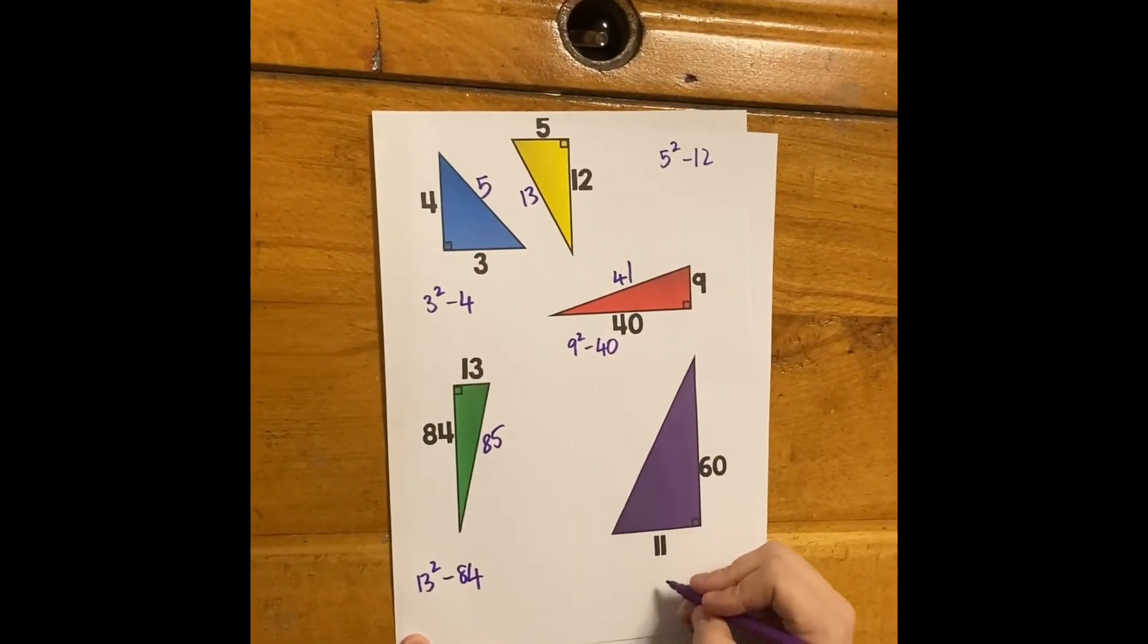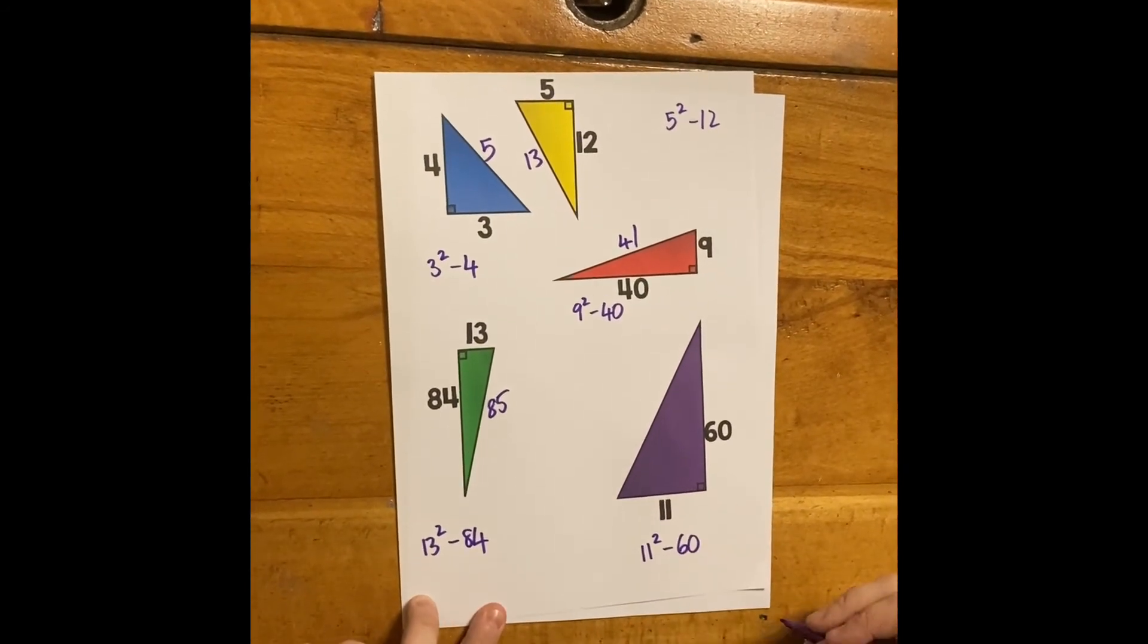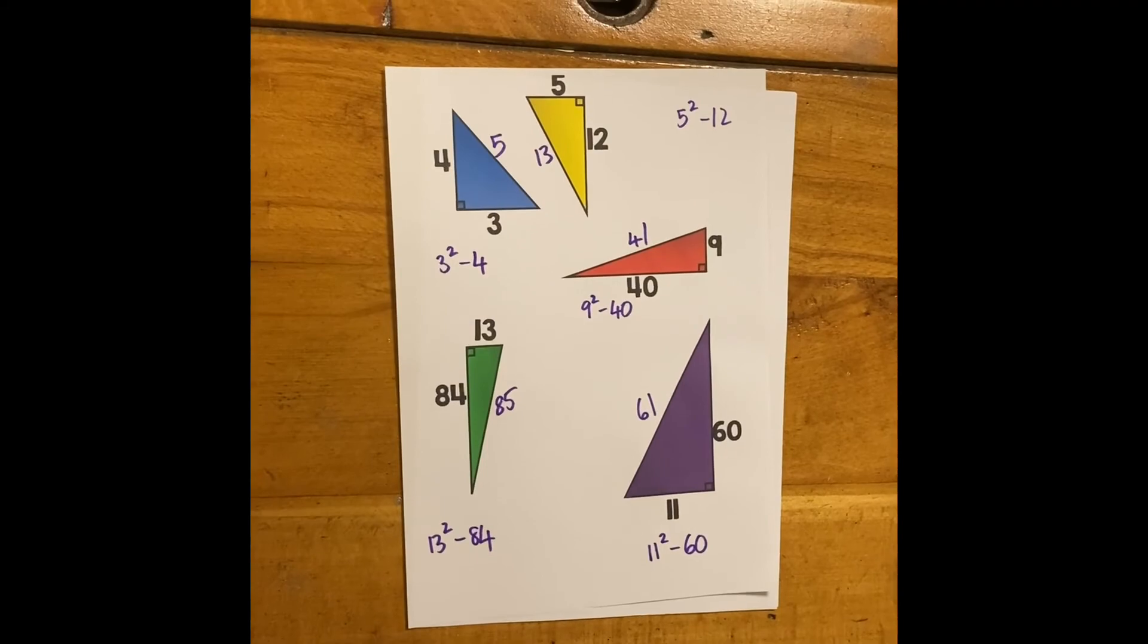Whoa. And then finally, 11 squared, 121, take away 60, is 61. That's how you do Pythagoras theorem. Boo.